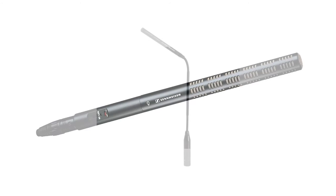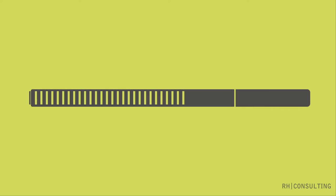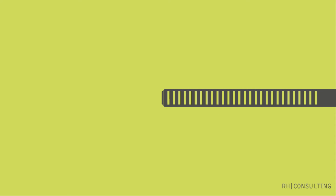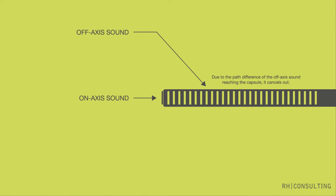Shotgun microphones are typically used in TV and film as they're excellent at picking up sound from a long way away. Their characteristic long design is known as an interference tube. The microphone capsule is mounted at the end of a long hollow tube with carefully positioned slots along its length. These slots allow sound to enter the tube, resulting in cancellation of sound not coming from where the microphone is pointing. In general, the longer the interference tube, the more directional the microphone will be.